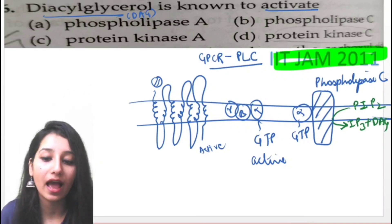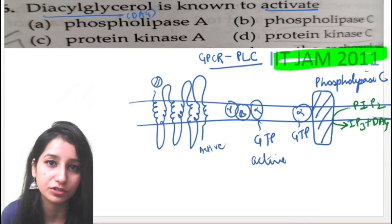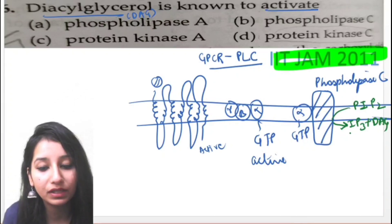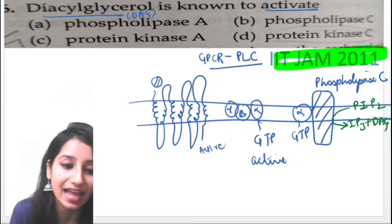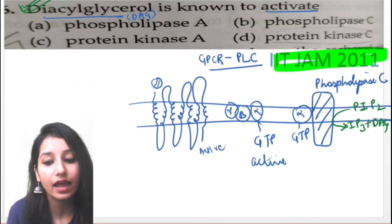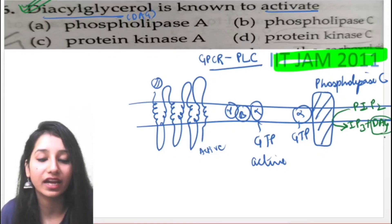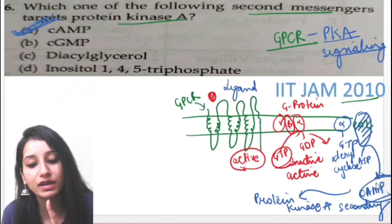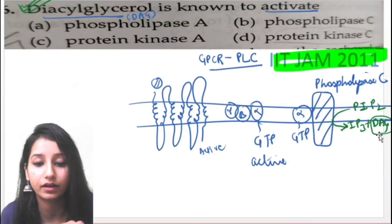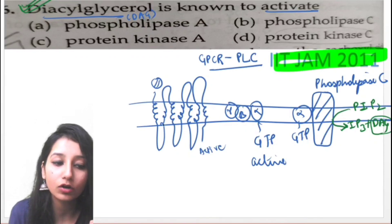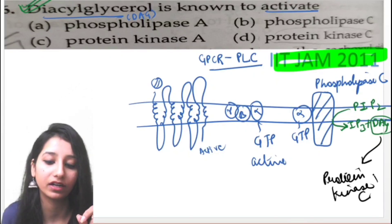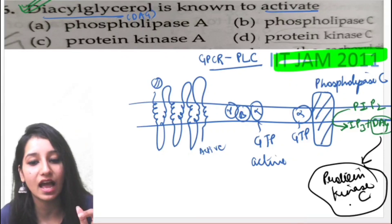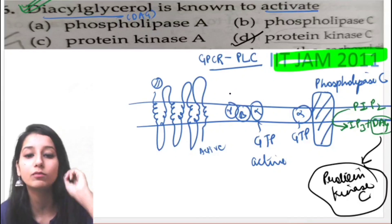PIP2 is phosphoinositol 4,5-bisphosphate. DAG is diacylglycerol, which acts as a secondary messenger. DAG activates protein kinase C — not protein kinase A. There is one key difference: the cAMP pathway activates PKA (protein kinase A), whereas the DAG pathway activates PKC (protein kinase C). The answer is protein kinase C, option D, which is correct.